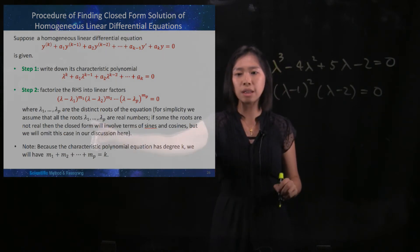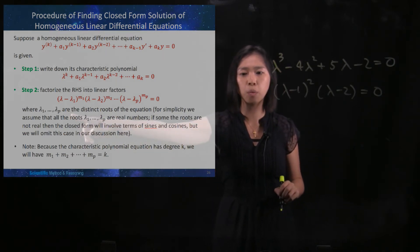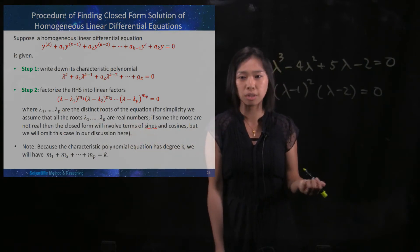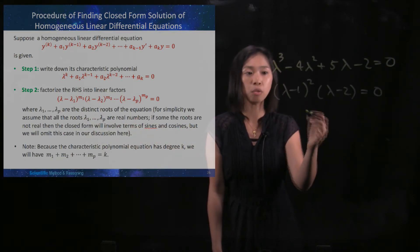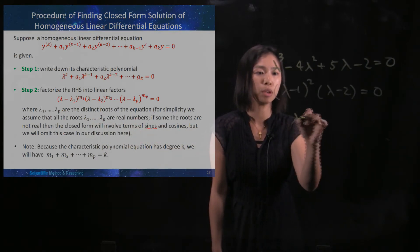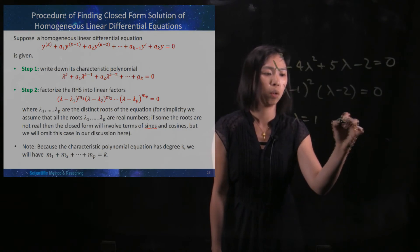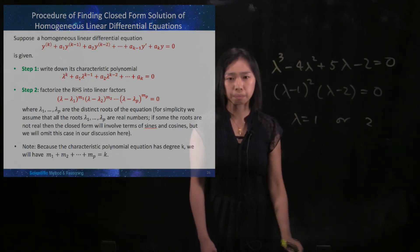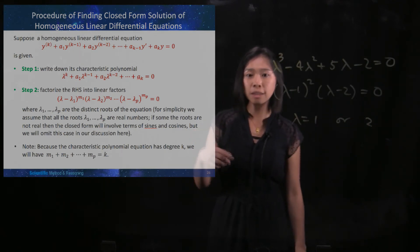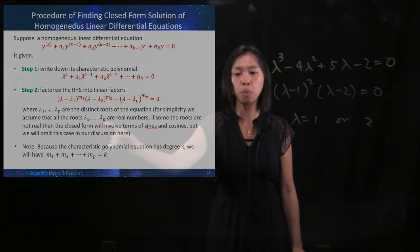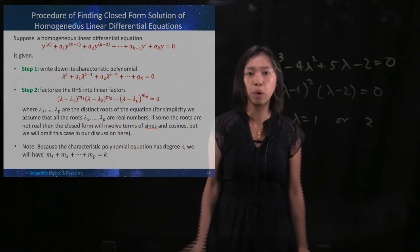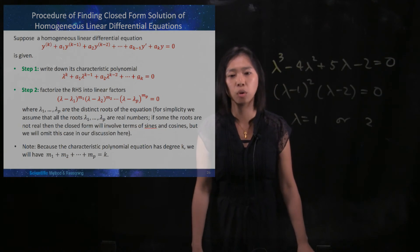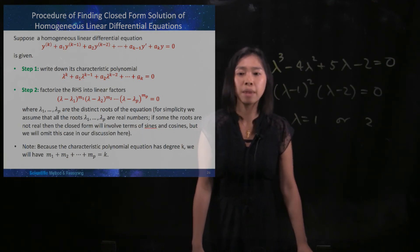Lambda 1 through p are the distinct roots of the equation. Here, we have the distinct roots lambda equals 1 or 2. In this course, for simplicity, we will assume all the roots to be real numbers — otherwise we may end up with sines or cosines, which we want to avoid.